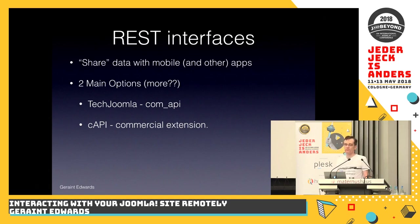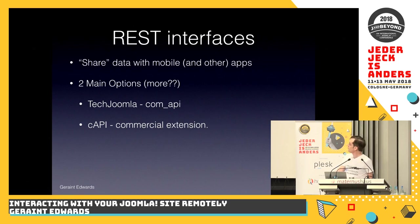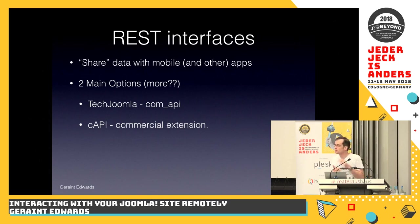So, REST interfaces. Are people familiar with REST interfaces? About a third. There have been lots of presentations at J and Beyond about this. It's not something I've used a lot, but it's a useful mechanism. What this does is it provides you some of the framework and structure for accessing data that you don't get with ComAjax. It allows you to share data with mobile or other applications. I know two real options in Joomla: TechJoomla's ComAPI, and CAPI, which is a commercial extension. There's also Jbackend mentioned from the audience, and Red Component have one as well.